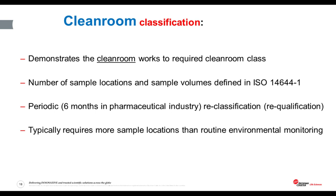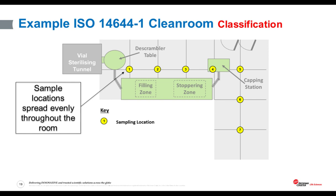The user themselves must take ownership of the decision of where environmental monitoring is done routinely. It must be based on a risk assessment of their specific production process, their product, and the clean room itself. Clean room classification focuses on the clean room itself — we're not looking at risk to the product, just checking that the clean room is performing to the target cleanliness class. It is very well described in ISO 14644-1 and is typically carried out every six or twelve months depending on your standard operating procedure.